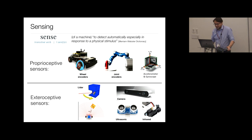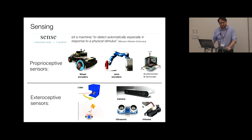Other sensors I'll mention are cameras, which are very popular right now for robot perception, and in earlier years there was a lot of work on cheaper sensors such as ultrasonic and infrared. That covers sensing — just terminology you may already be familiar with, so we'll move quickly to the perception part.